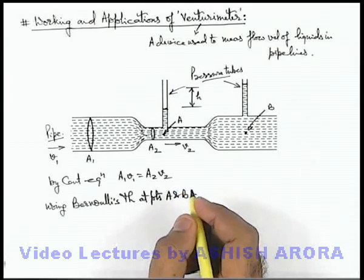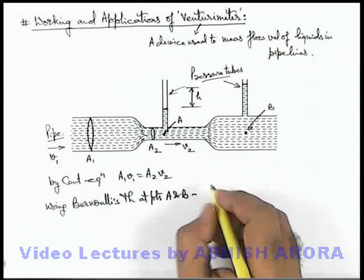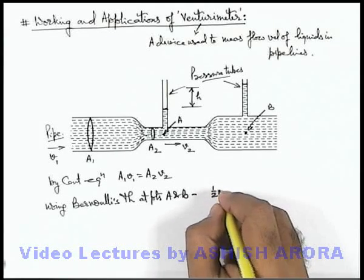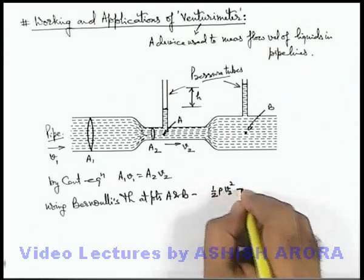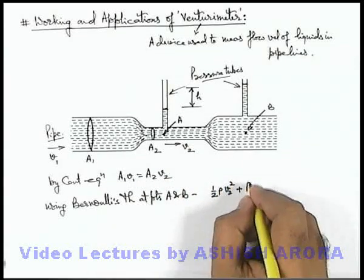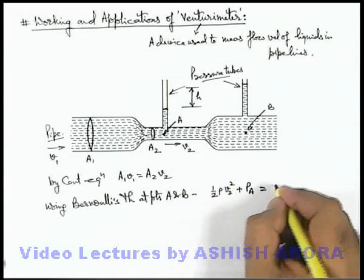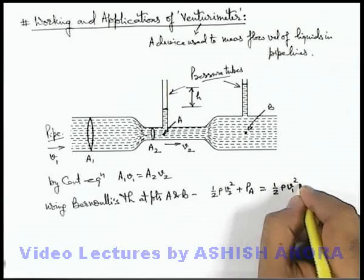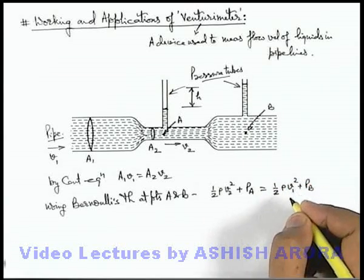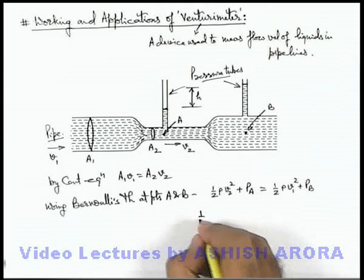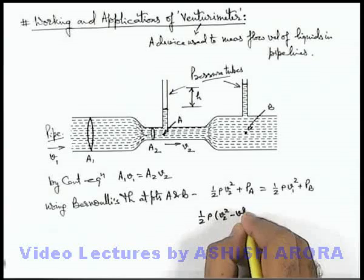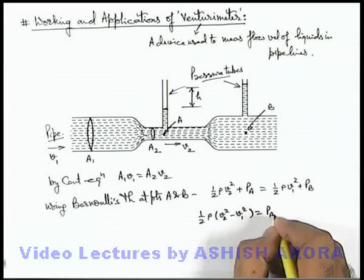Using Bernoulli's theorem at points A and B, here we'll be getting at point A the kinetic energy of liquid particles per unit volume will be half ρ v1 square plus here pressure can be written as PA. And this must be equal to at point B we can write half ρ v2 square plus PB. And in this situation we can write half ρ (v2 square minus v1 square) is equal to PB minus PA.